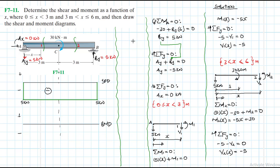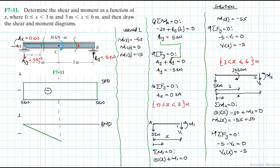For the moment diagram, let's look at interval 1, which is from 0 to 3. M1 of x is equal to minus 5x, which is just a linear function. Therefore, M1 at x equal to 0 we expect moment to be 0, and M1 when x is equal to 3 we expect moment to be equal to minus 15. So we plot that — a linear function going from 0 to negative 15 kilonewton meters.